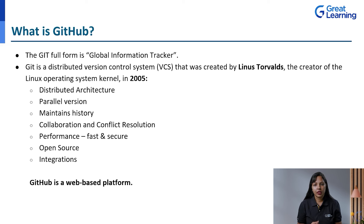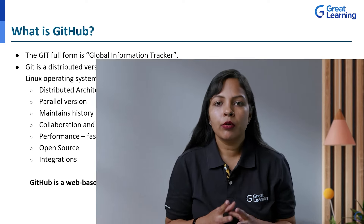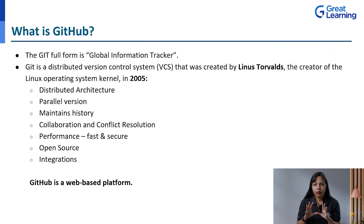Git stands for Global Information Tracker. Git was initially developed to be a version control system and it's a distributed architecture. Version control system means — suppose you've developed a software or a project; that was the initial version. Now you did some updates, some functionalities were added or removed and the next version of the software is created. The older version should also be stored, worked upon, and then the newer version installed. Git provides that platform.